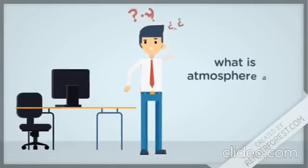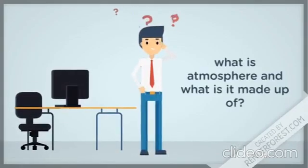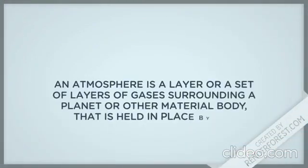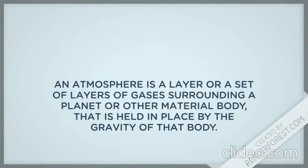What is atmosphere and what is it made up of? An atmosphere is a layer or a set of layers of gases surrounding a planet or other material body that is held in place by the gravity of that body.